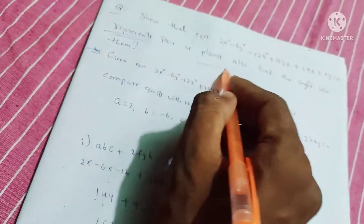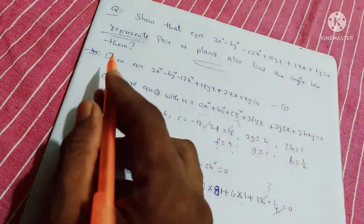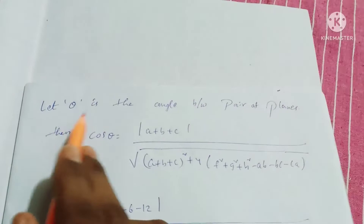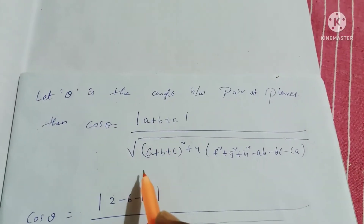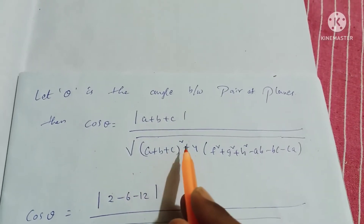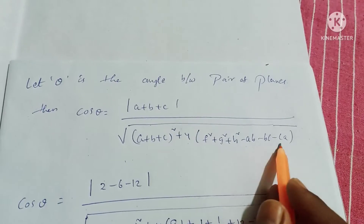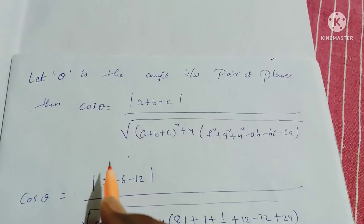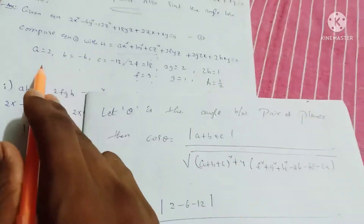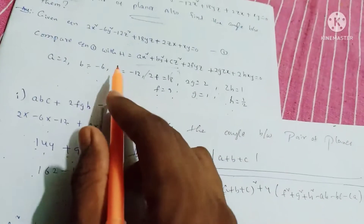Now find the angle between the planes. Let theta be the angle between the pair of planes. Then cos theta equals (a plus b plus c) divided by the square root of (a plus b plus c) whole squared plus 4 times (f squared plus g squared plus h squared minus ab minus bc minus ca). Here a equals 2, b equals minus 6, c equals minus 12.